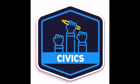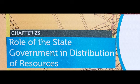Good morning, my dear students of class 7th. Welcome to the online learning platform. We are discussing chapter 23 of civics, that is the role of state government in distribution of resources.